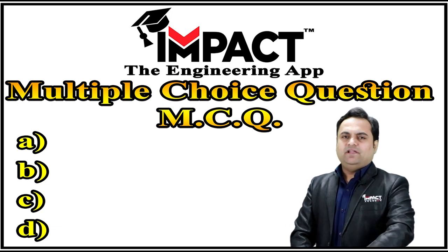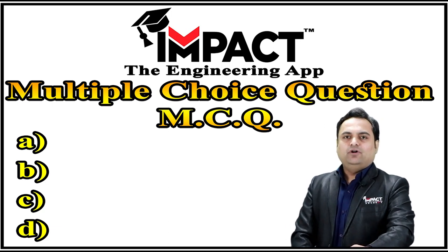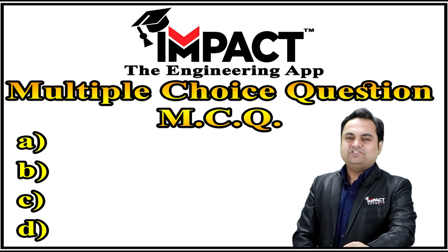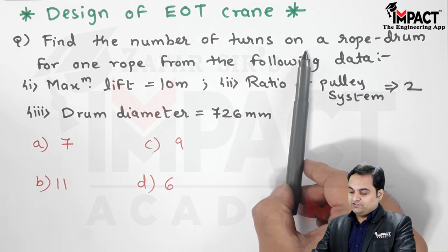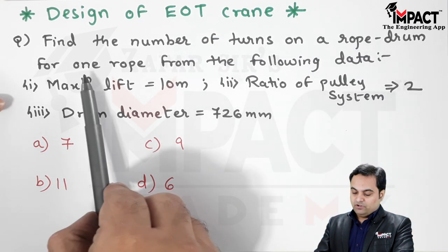Hi friends, here in this video I'll be explaining the MCQ on design of EOT crane. So let's start. Now here is the question: find the number of turns on a rope drum for one rope from the following data.